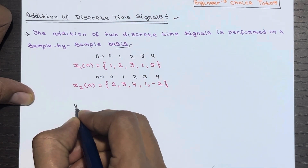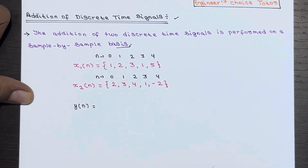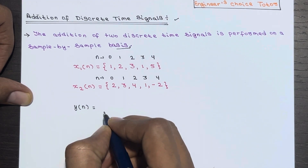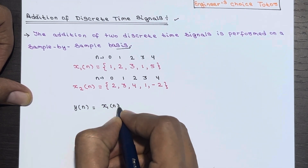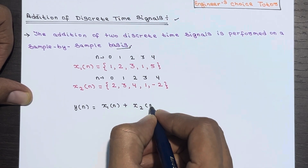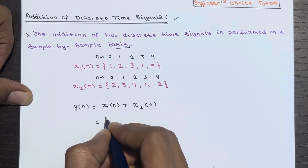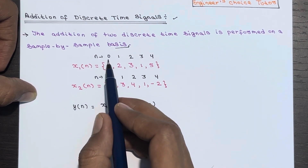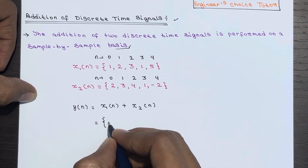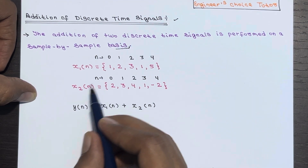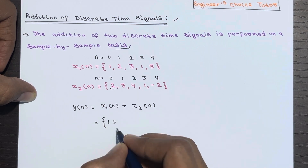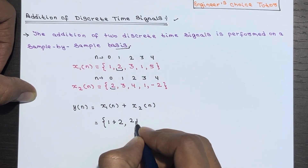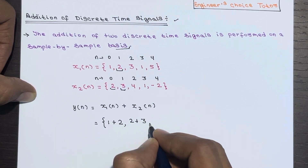We have to calculate y(n), where y(n) equals x1(n) plus x2(n). We go sample by sample. At n equal to 0: what is the value of x1(n)? It is 1. Plus what is the value of x2(n) at n equal to 0? It is 2. So 1 plus 2. At n equal to 1: x1(n) is 2, plus x2(n) which is 3. So 2 plus 3.